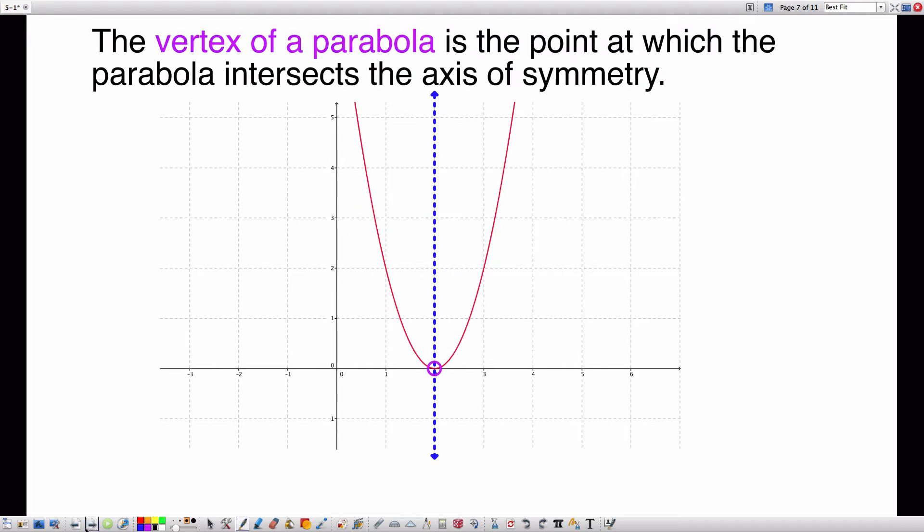The vertex of a parabola is the point where the axis of symmetry meets the parabola. That's right here. It's also either the maximum or the minimum value of the graph at any given time. If I had a parabola that looked like this, the vertex would be here, and that would be the maximum value of the function. In this case, the vertex is the minimum value of the function.